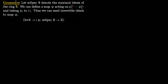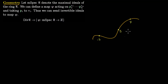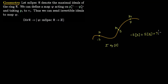We now want to connect this to the divisors defined on curves. We had a curve, and on it we placed a finite number of points, associating an integer to each point — for example, −3 to p1, 5 to p2, and 7 to p3. A divisor is written as a finite sum ∑ nₚ · P, where nₚ = 0 for all but finitely many points. So the example gives the divisor −3p1 + 5p2 + 7p3.